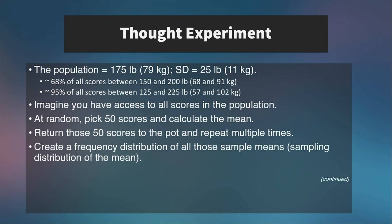Here's a thought experiment. Let's say you wanted to calculate the mean body mass of males at a university — 1,500 males, and you can only measure 50 of them. Suppose we know the population mean is 175 pounds and the standard deviation is 25 pounds. Because this data is normally distributed, 68% of all scores fall between 150 and 200 pounds, and 95% of all scores fall between negative two and two standard deviations above and below the mean.